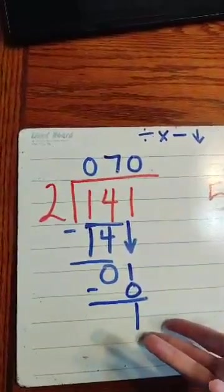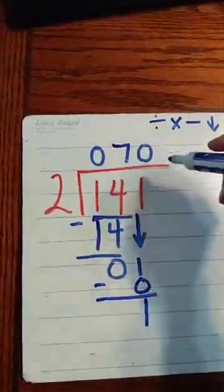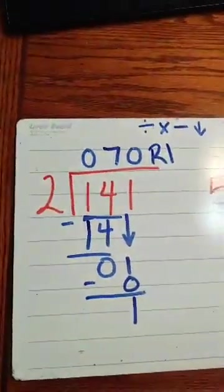I have nothing left to bring down, so what do I do with this 1? You're right, it's a remainder. I put an R1 up there, remainder 1.